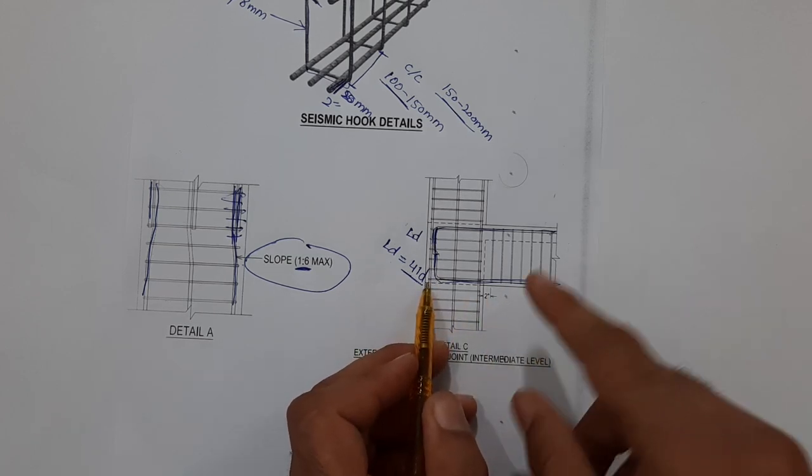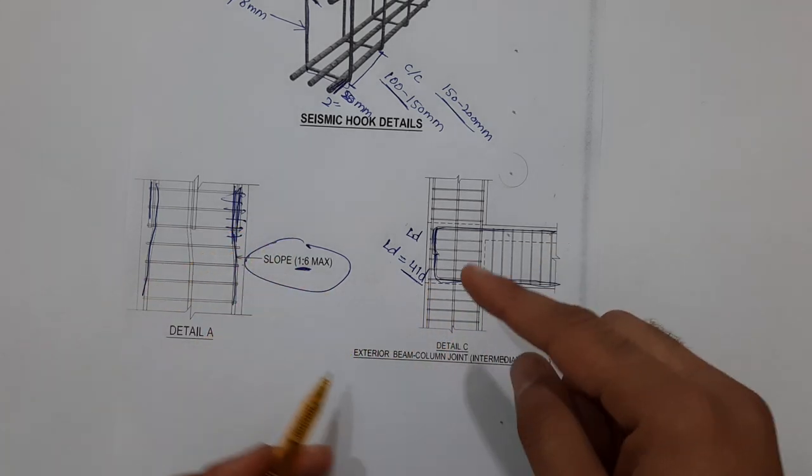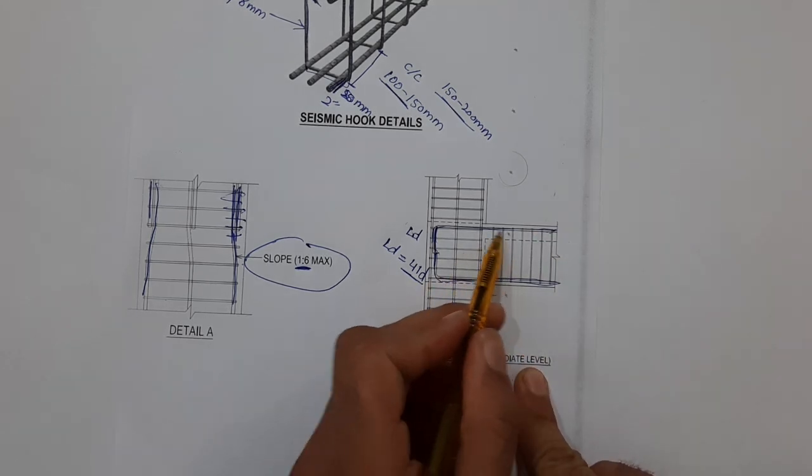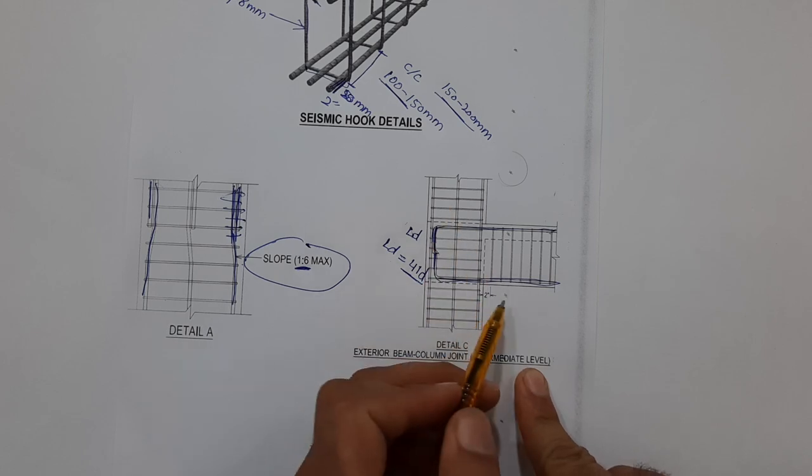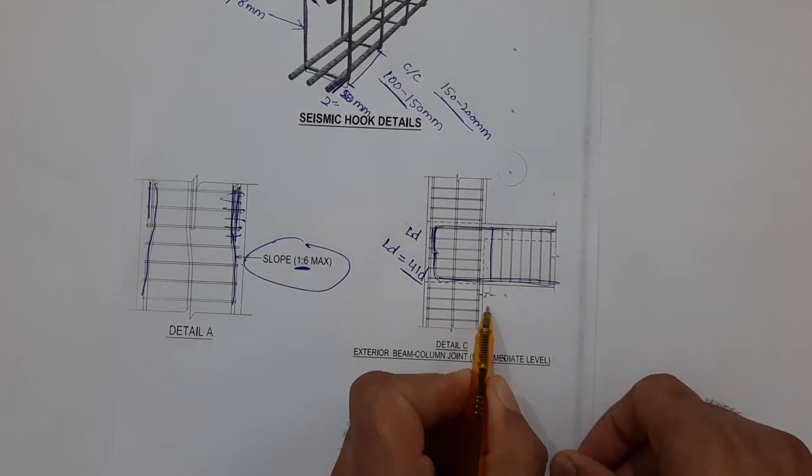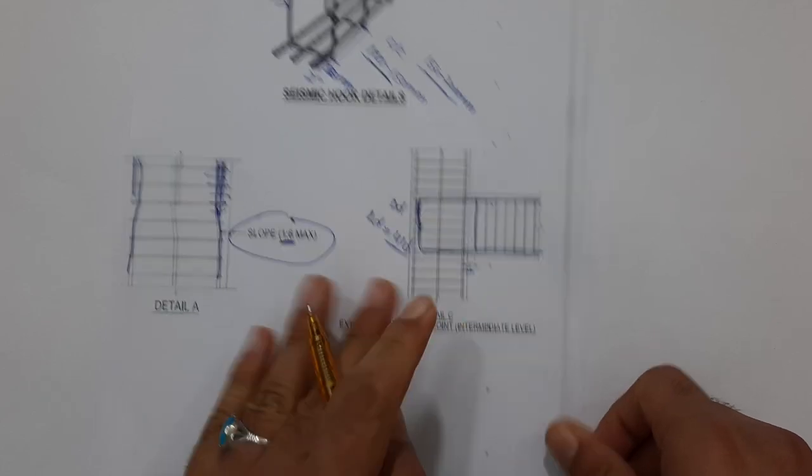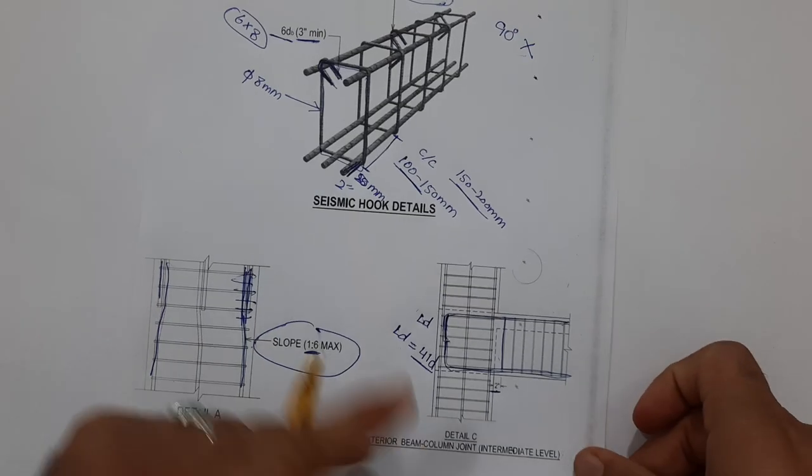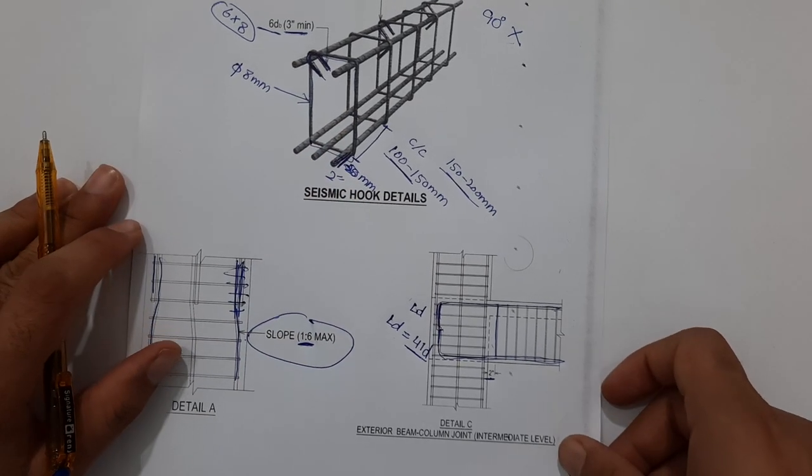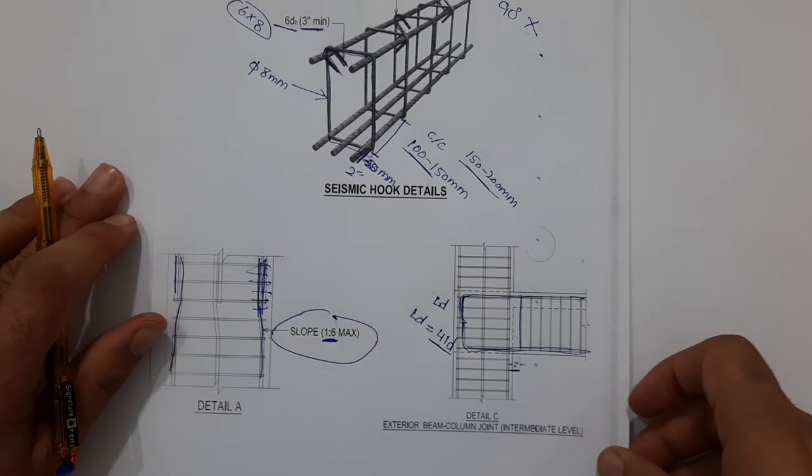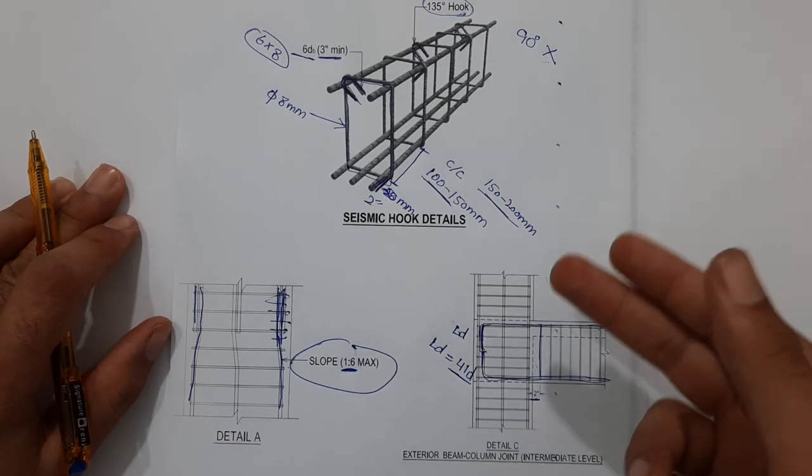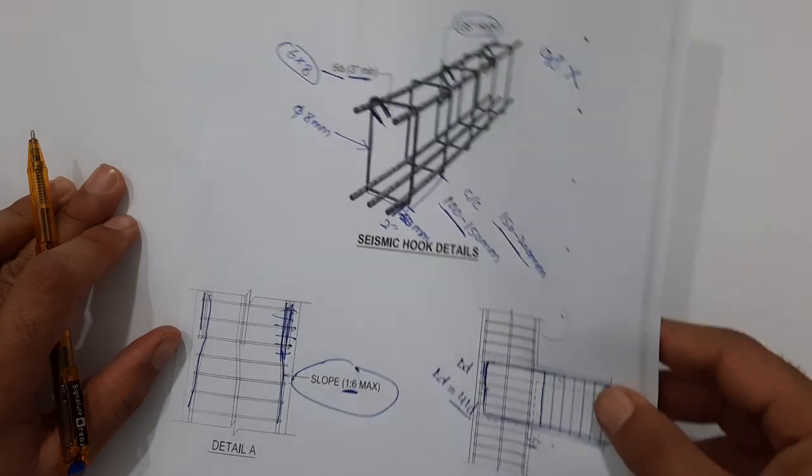This is the joint between beam and column. You will get the joint like this. You can see the stirrup is placed with two inches minimum as I told you before in this detail, especially for the hooks and beam.